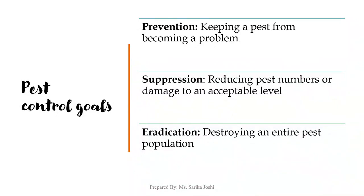The next goal of pest control is suppression — reducing pest numbers or damage to an acceptable level. The intent is to reduce the number of pests to a level where the harm they cause is just about acceptable. Once a pest's presence is detected and control is deemed necessary, suppression and prevention are often joint goals. The third and major goal is eradication, that is destroying an entire pest population. This is a rare goal for outdoor pest situations as it is difficult to achieve, and is occasionally attempted when a foreign pest has been accidentally introduced into your environment.